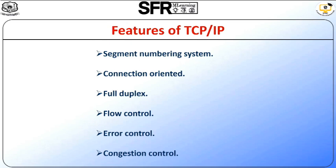The fourth feature is flow control. Flow control limits the rate at which a sender transfers data, done to ensure reliable delivery. The receiver continually hints to the sender on how much data can be received. The next feature is error control. TCP implements an error control mechanism for reliable data transfer; error control is byte-oriented and segments are checked for errors. The next feature is congestion control. TCP takes into account the level of congestion in the network, and the congestion level is determined by the amount of data sent by the sender. These are all the features of TCP/IP.